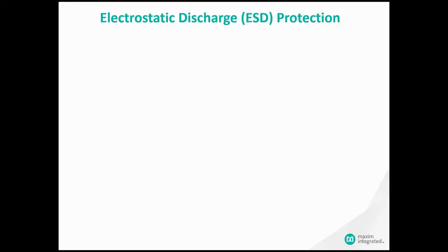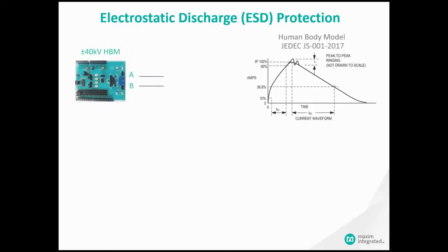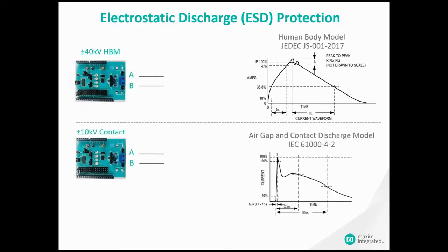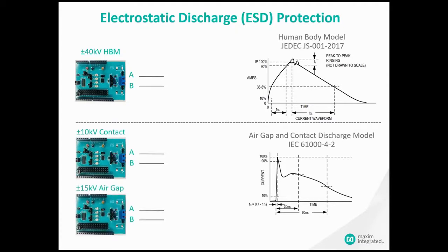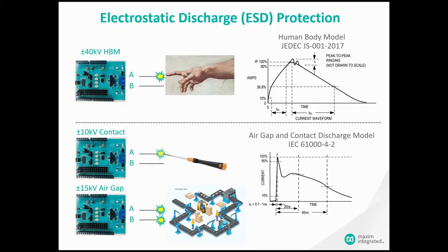Now for the ESD protections. The MAX 33072E A and B pins can withstand plus or minus 40 kV HBM discharge, plus or minus 10 kV contact discharge, and plus or minus 15 kV air gap discharge. The part continues to work without latch-up or damage. Electrostatic discharge can commonly occur from either human touch or other equipment during production or out in the field for installation or maintenance.